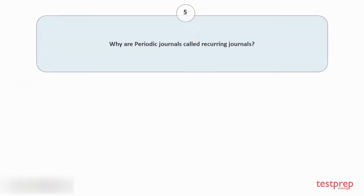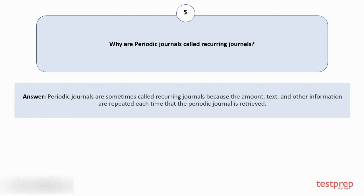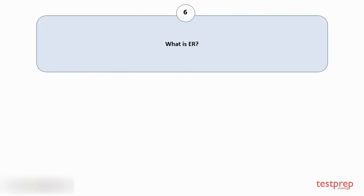Question number 5: Why are periodic journals called recurring journals? Periodic journals are sometimes called recurring journals because the amount, text, and other information are repeated each time that the periodic journal is retrieved.